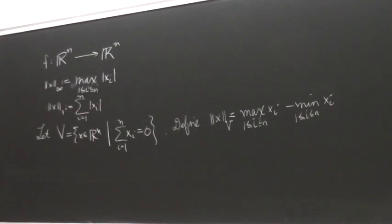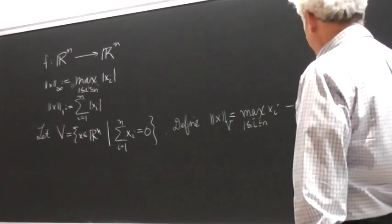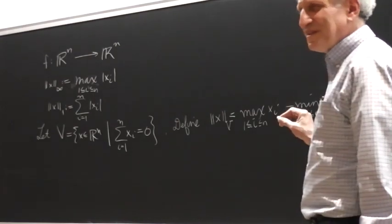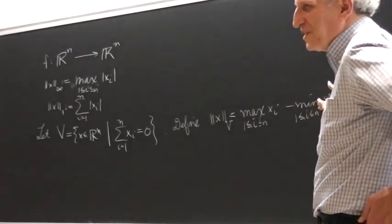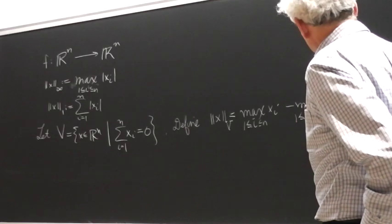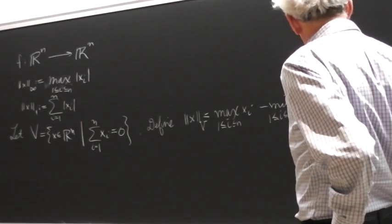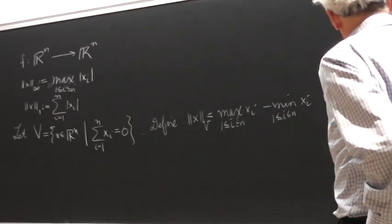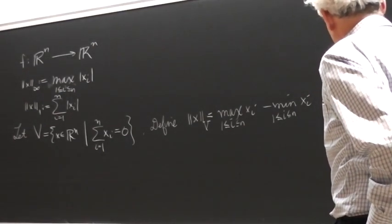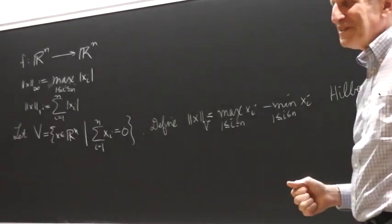So your first impulse might be, wait a minute, if you plug in x equal to (1,1,1,1,1), that's zero, that's not a norm, because the norm of this is zero. But (1,1,1) has been excluded from that subspace. This thing is not actually a bizarre norm, it's actually closely related to something called Hilbert's Projective Metric.